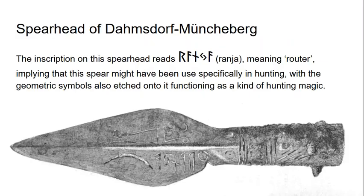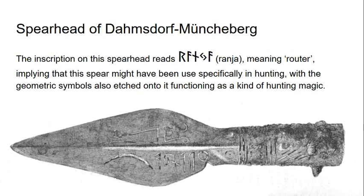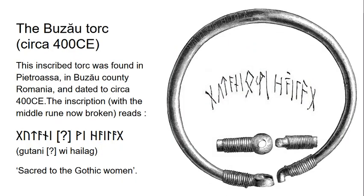Here is a spearhead from Damsdorf-Müncheberg in Germany, and the inscription reads 'ranja,' meaning a 'router' — a member of a hunting party who directs the animal to be captured. The geometric symbols might have functioned as a kind of hunting magic.